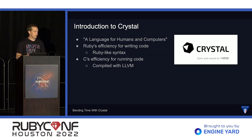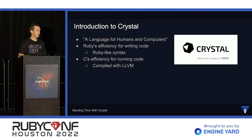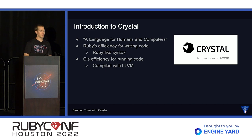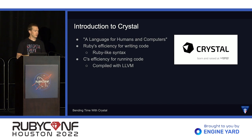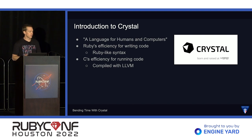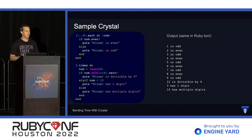Now I'm going to give just a quick introduction to Crystal. I think there was a talk at RubyConf Mini about Crystal, and I'm really excited to see that when the videos come out. This quote is straight from their website: "a language for humans and computers." I think that's a really cool way of thinking about it. For humans, we get Ruby's efficiency for writing code because Crystal has a Ruby-like syntax. And for computers, we get C's efficiency for running the code because Crystal is compiled with LLVM. But rather than talking about it, let's take a look at some Crystal code.